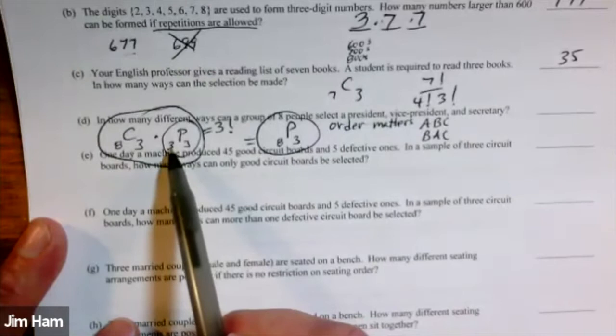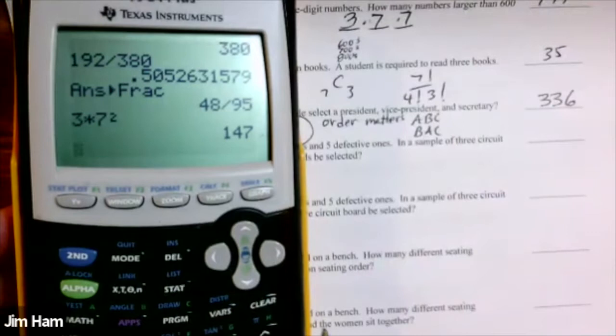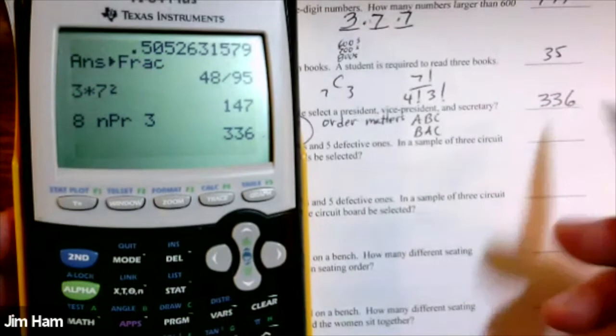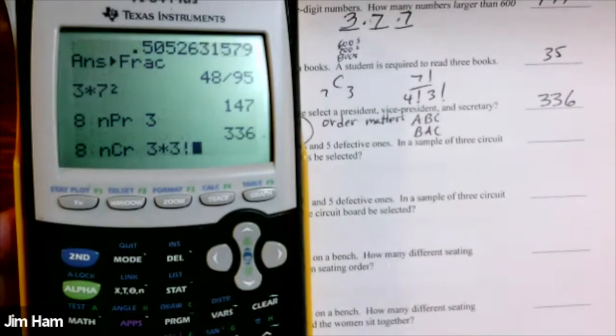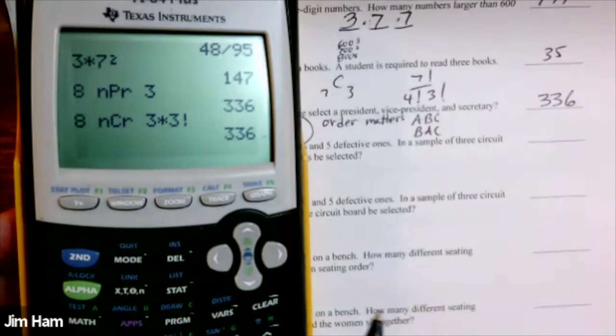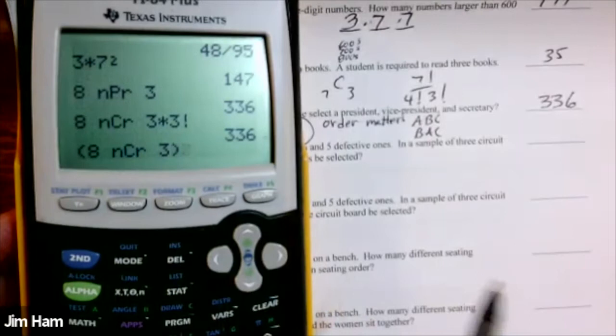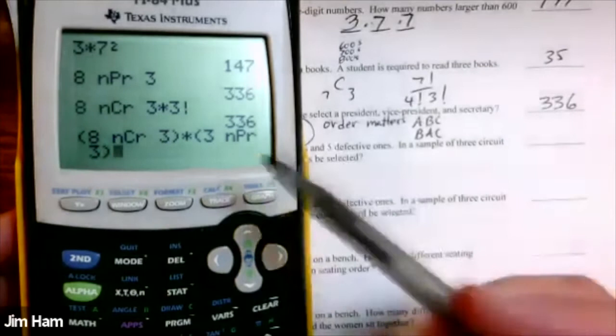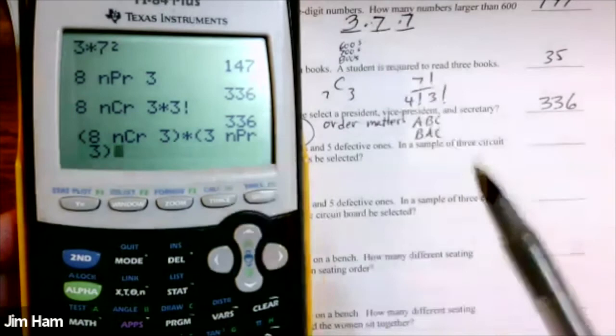Sometimes it's more advantageous to use this process. You can take eight choose three and multiply by three factorial — so choose the three and then order them all. Once you get the three, arrange them. You can think about it in a lot of different ways.